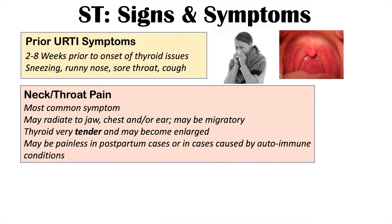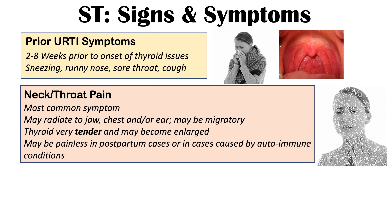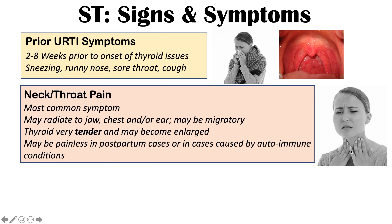When thyroid issues arise, the hallmark finding in this condition is neck or throat pain — this is actually the most common symptom. The throat pain is located in the area of the thyroid gland; it's not going to be a sore throat but rather a painful throat on the outside — if you were to touch it, it would be very tender. That pain can radiate to the jaw, the chest, and the ear, and it may be migratory — moving from one side of the thyroid to the other, or it can be bilateral from the beginning. The thyroid gland, if touched, can be very tender and may become enlarged as well.